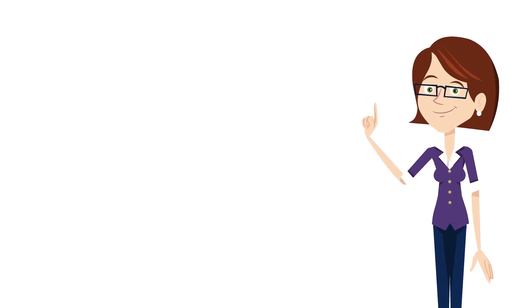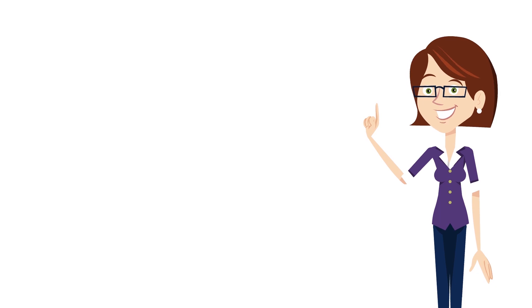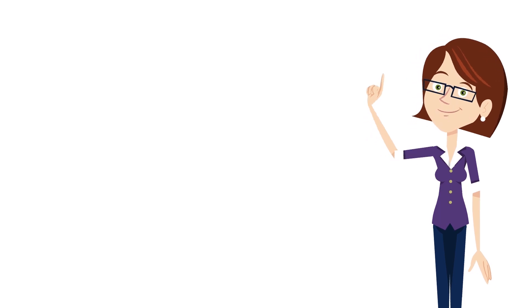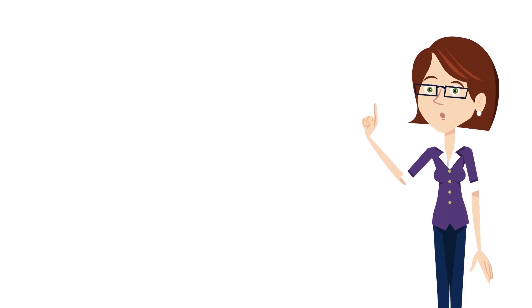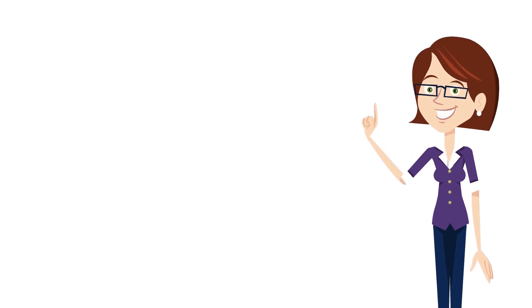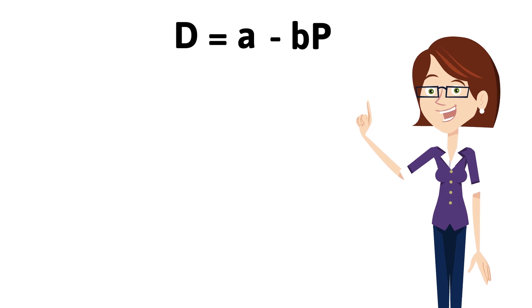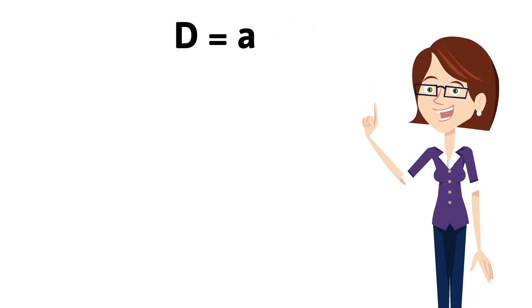Let us try to understand this love triangle using mathematics. The negative relationship between demand and price may be expressed in the form of an equation: D = a − bP. If P is 0, D is equal to a, some positive constant or an independent value.